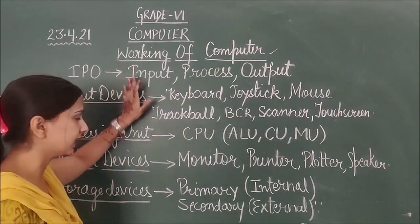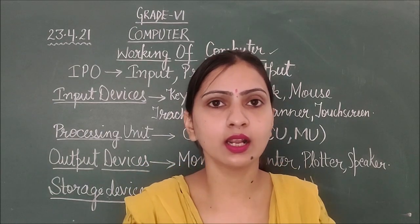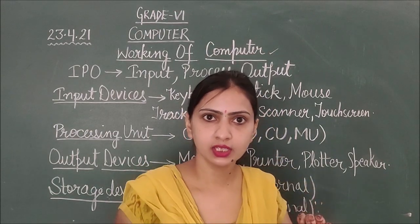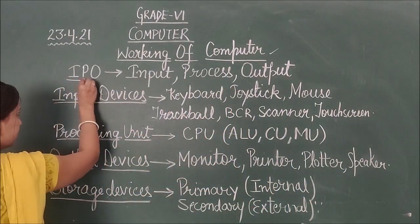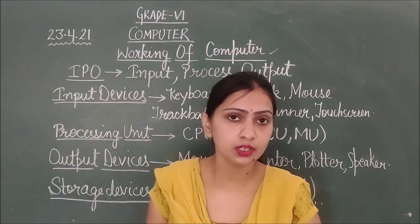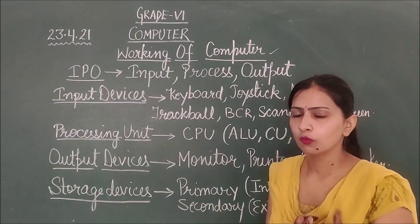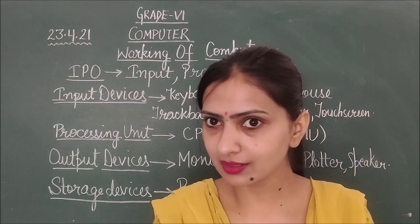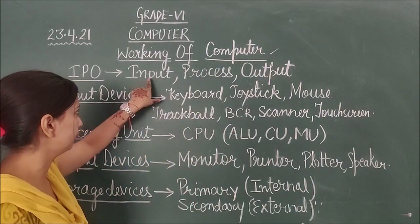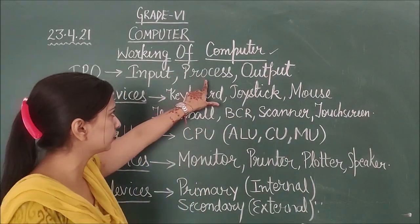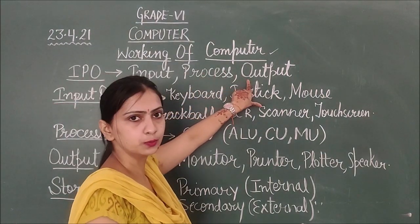This computer how to work? Which is the cycle? This is where the computer is based. So, we start with the IPO cycle, which is how our computer works. IPO. What is the full form of IPO? Do you know students? IPO's full form? I stands for Input. P stands for Processing or Process. O stands for Output.